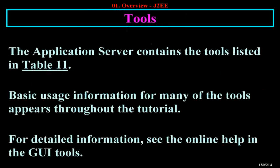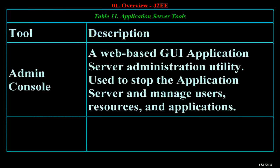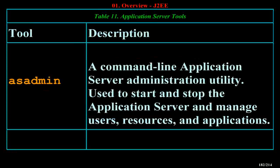The application server contains the tools listed in Table 1-1. Basic usage information for many of the tools appears throughout the tutorial; for detailed information, see the online help in the GUI tools. The Application Admin Console is a web-based GUI application server administration utility used to stop the application server and manage users, resources, and applications. Asadmin is a command-line application server administration utility used to start and stop the application server and manage users, resources, and applications.